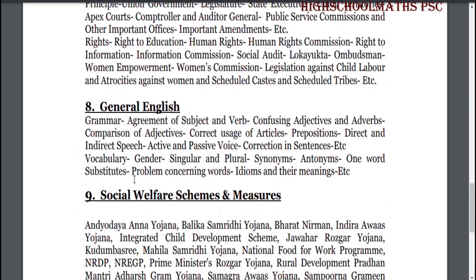Part 8: English and General English. Grammar topics: agreement of subject and verb, confusing adjectives and adverbs, comparison of adjectives, correct usage of articles, prepositions, direct and indirect speech, active and passive voice, correction in sentences etc. Vocabulary topics: gender, singular and plural, synonyms, one word substitutes, problem concerning words, idioms and their meanings etc.